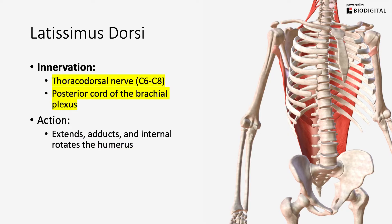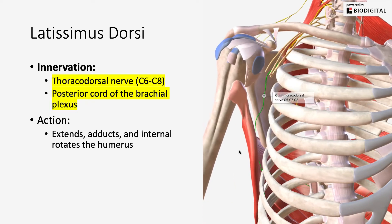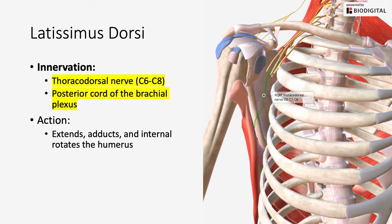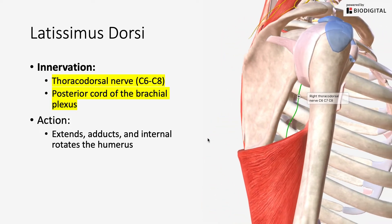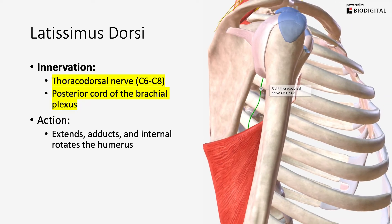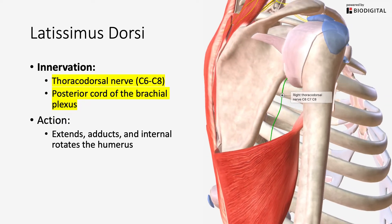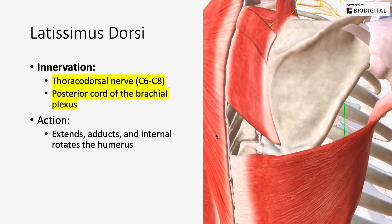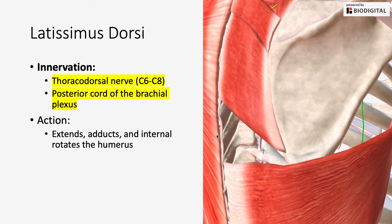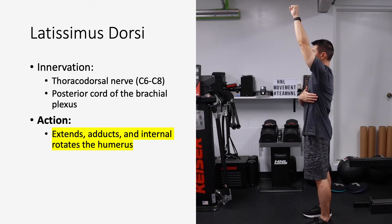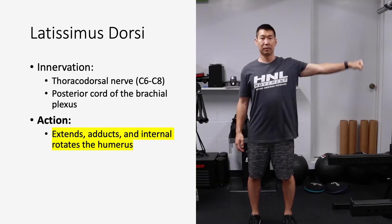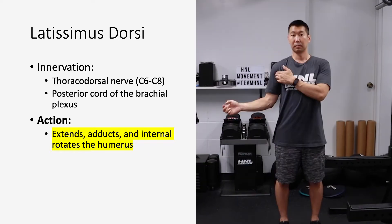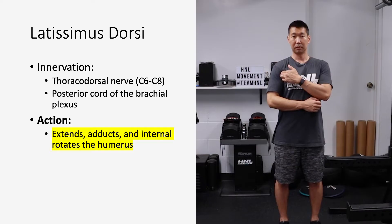The innervation of the latissimus dorsi is the thoracodorsal nerve, coming off of the posterior cord of the brachial plexus. This is innervated by nerve roots C6 through C8. The action of your latissimus dorsi is that it extends, adducts, and internally rotates the humerus.